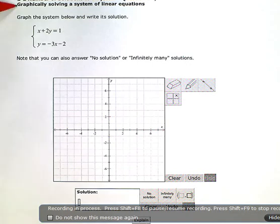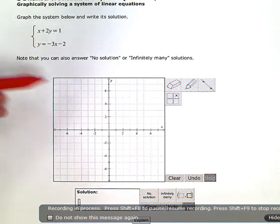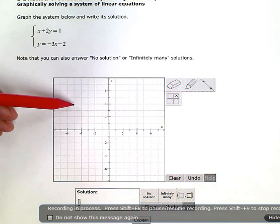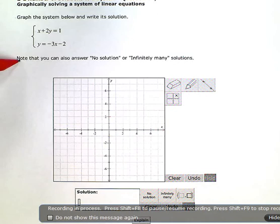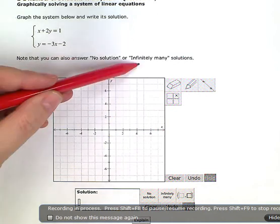Graphically solving a system of linear equations. Graph the system below and write its solution. So I have two equations here, one of them is in slope intercept form, one in standard form. I'm going to graph them on the same coordinate plane here and I'm looking for the point of intersection. Note that you can also answer no solution or infinitely many solutions.